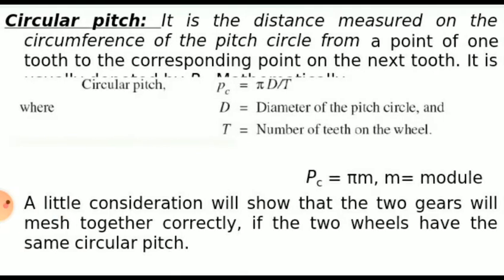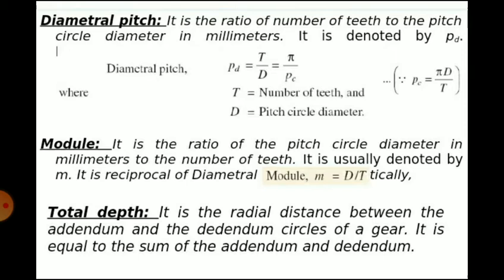Circular pitch is the distance measured on the circumference of the pitch circle from a point on one tooth to the corresponding point on the next tooth. Diametral pitch is the ratio of number of teeth to the pitch circle diameter in millimeters. Module is the linear distance in mm that each tooth of the gear would occupy if the gear teeth were spaced along the pitch diameter — it is the ratio of pitch circle diameter in mm to the number of teeth, given by m = d/t.